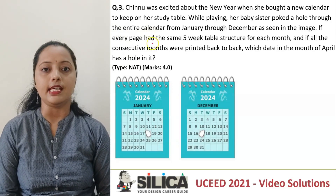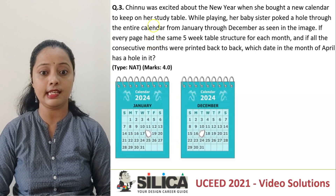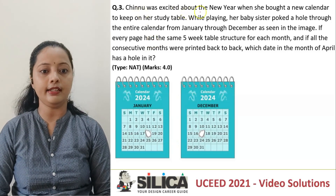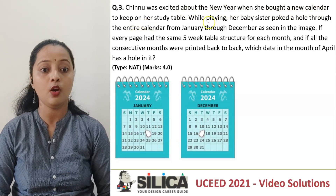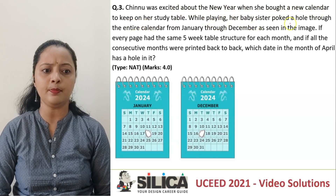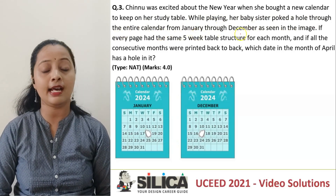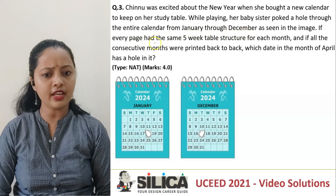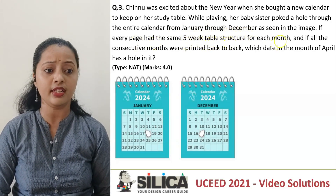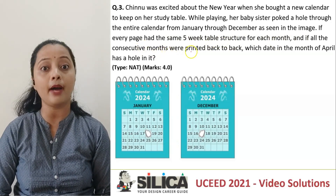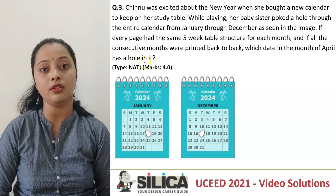Hello everyone. We'll now see a question from the UC 2021 paper. Chinoo was excited about the new year when she bought a new calendar to keep on her study table. While playing, her baby sister poked a hole through the entire calendar from January through December as seen in the image. Every page has the same five-week table structure for each month, and all consecutive months were printed back to back. Which date in the month of April has a hole on it?